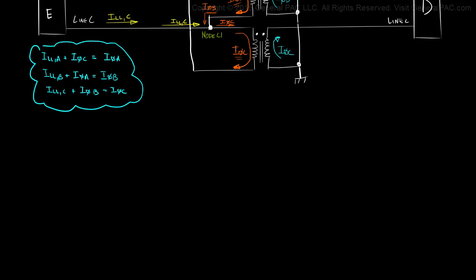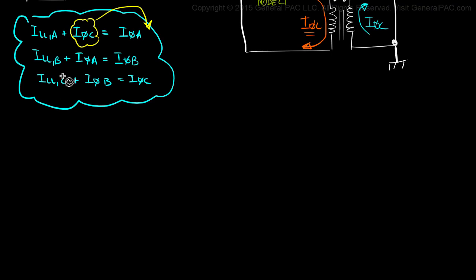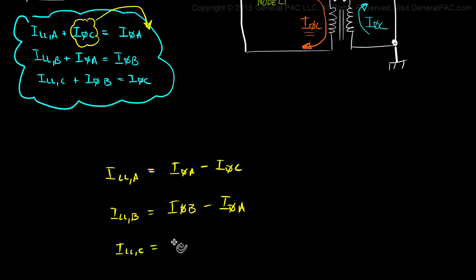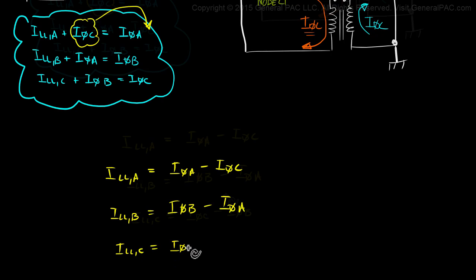Let's rewrite these equations into something that makes a little more sense. All we're going to do is take this phase current and move it to the other side of the equation and solve for the line current A. So line current A equals phase current A minus phase current C. Similarly, line current B equals phase current B minus phase current A. And line current C equals phase current C minus phase current B.